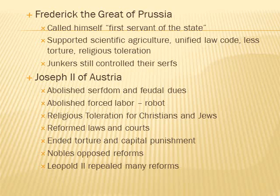Frederick the Great of Prussia called himself the first servant of the state. He supported scientific agriculture, a unified law code, less torture, and religious toleration. But the Junkers, the nobility, remained firmly in control of their serfs. Joseph II of Austria — probably the most committed to enlightened despotism — abolished serfdom and feudal dues, abolished forced labor called the Robot, established religious toleration for Christians and Jews, reformed laws and courts, and ended torture and capital punishment entirely. However, nobles opposed some of these reforms, and when his brother Leopold II took over, many reforms were repealed.